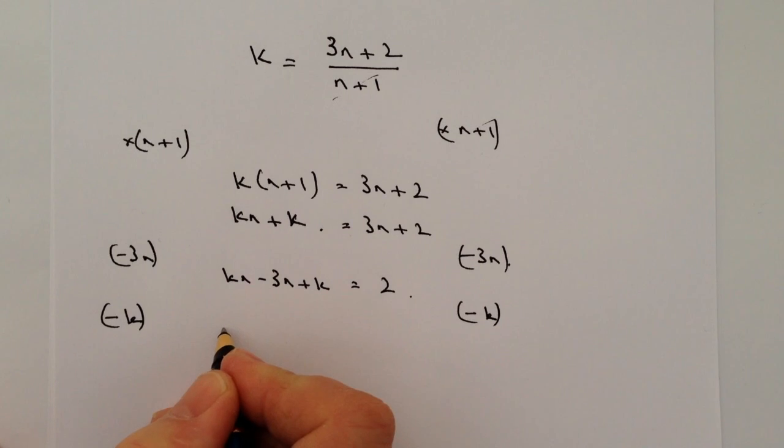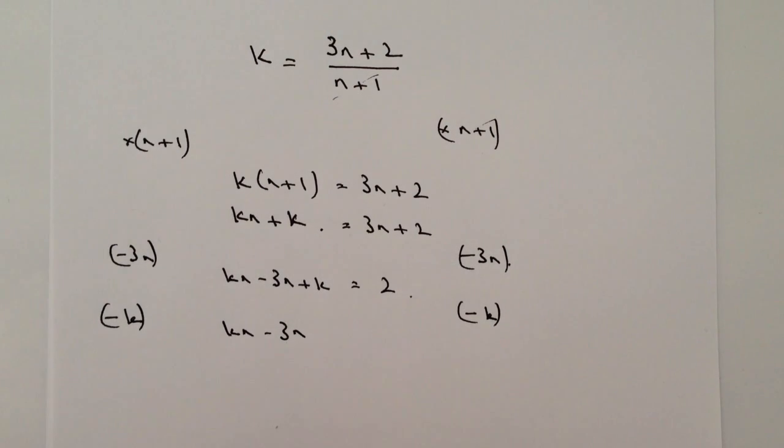And that's going to be great because I'll end up then with a situation where I've got both of my n terms on the left hand side and everything else to minus k on the right hand side.